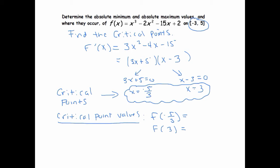So at negative 5/3, it looks like the output is about 16.815. And at 3, I get a negative 34.